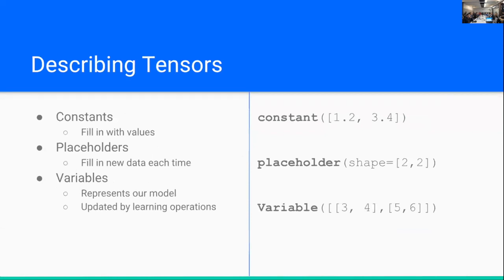So there are three main ways that we describe tensors within TensorFlow. There are constants, where we just fill in the values when we initialize, and they hold these values for the entirety of our process. Then there are placeholders, where we'll assign them a shape but no values, and on each iteration of our learning algorithm, we'll fill them in with different values. And then there's also variables. Variables are how we represent our model. These are tensors that we initialize, but certain learning operations like gradient descent will change the values as we start learning more and our model gets better. But we won't deal with variables a whole lot. Constants and placeholders will be our focus here.